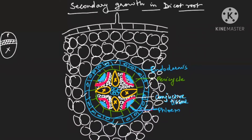And above xylem, who will help? Above xylem, the work is given to the pericycle. The pericycle is going for de-differentiation above xylem to form a part of vascular cambium, but it is helping only above xylem. So when they are going for secondary growth, their first work is to make vascular cambium, which is made by the conjunctive tissue below phloem and by the pericycle above xylem.